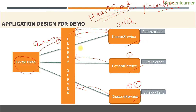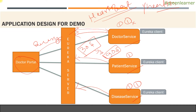By default, the heartbeat interval is 30 seconds. Every 30 seconds the Eureka server sends a heartbeat to check if each registered service is available or not. If it is not available, it keeps sending — it tries three times. After three times, if it is not getting the proper response from that service, it marks that service as down. So one service can be down for 90 seconds but still show as available on the Eureka server — this is the default behavior.